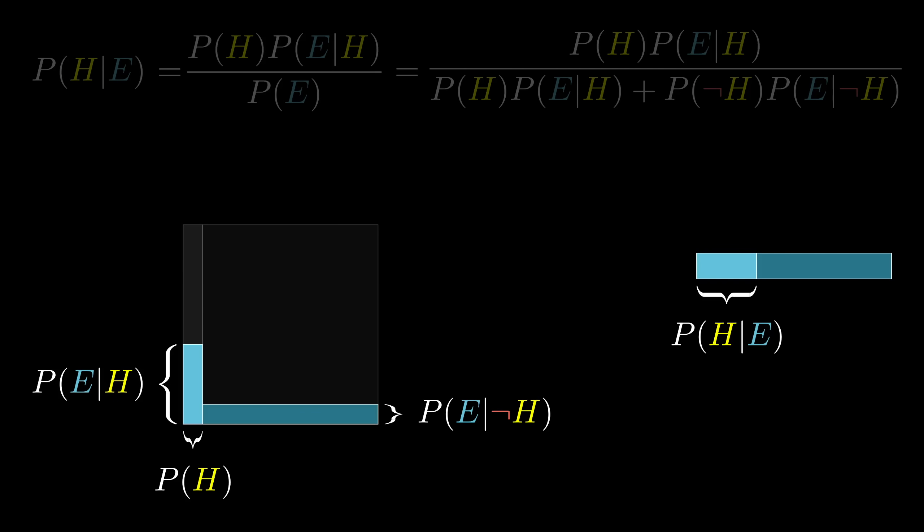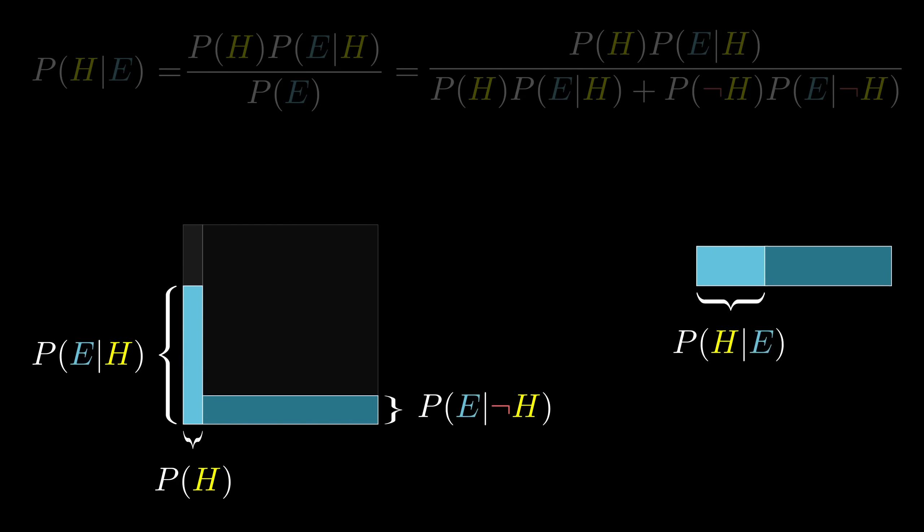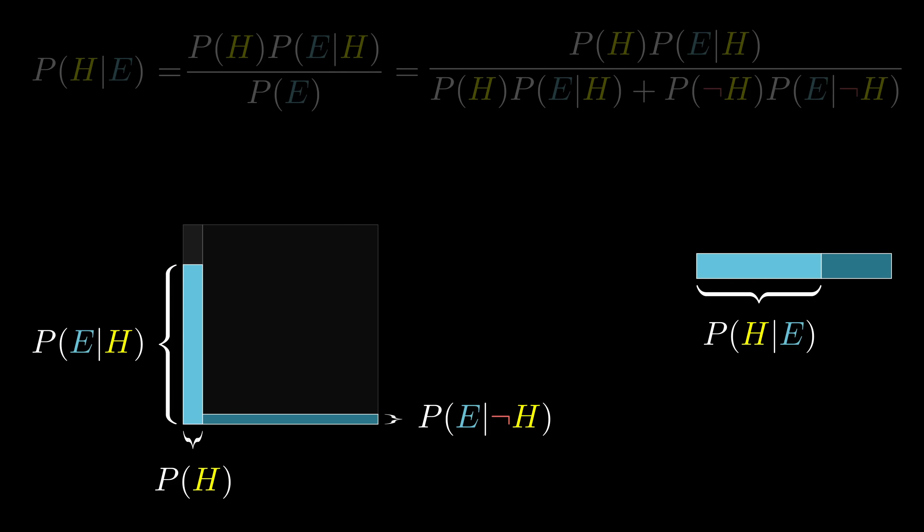So the new probability for the hypothesis is the proportion that it occupies in this restricted wonky shape. Now if you happen to think that a farmer is just as likely as a librarian to fit the evidence, then the proportion doesn't change, which should make sense, right? Irrelevant evidence doesn't change your beliefs. But when these likelihoods are very different from each other, that's when your belief changes a lot.